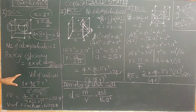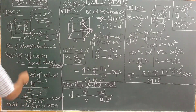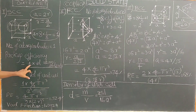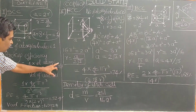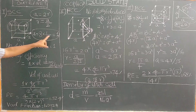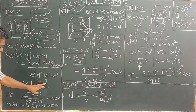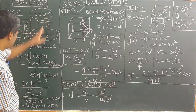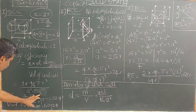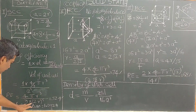Now, packing efficiency. What do you mean by packing efficiency? It is given by the volume occupied by atoms divided by volume of the unit cell. Volume of the unit cell is A cubed, since length equals breadth equals height equals A for a cubic unit cell. The number of atoms is one, so packing efficiency equals one times (4/3)πR³ divided by A³.